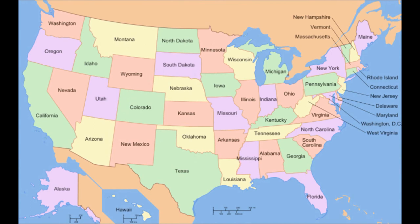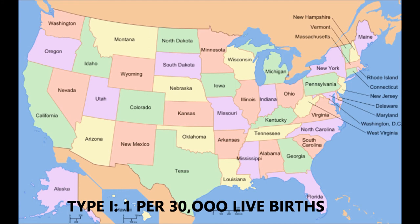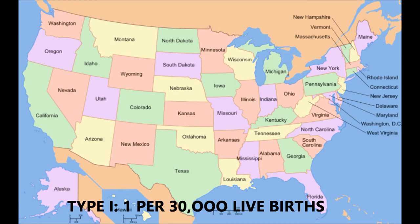Statistics of OI in the U.S.: Type 1 occurs in 1 per 30,000 live births. Type 2 occurs in 1 per 60,000 live births. Type 3 occurs in 1 per 70,000 live births. Type 4 occurs in 1 per 70,000 live births. Types 4 through 7 are very rare.